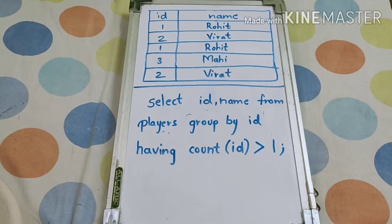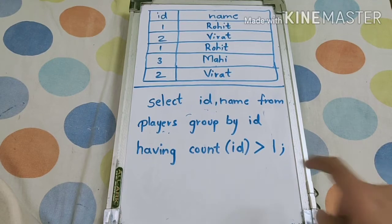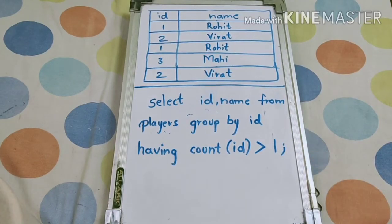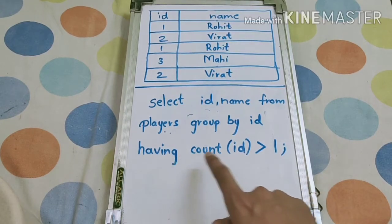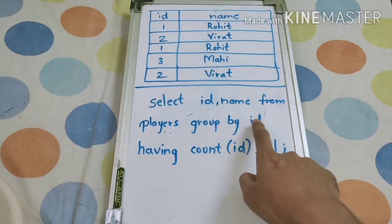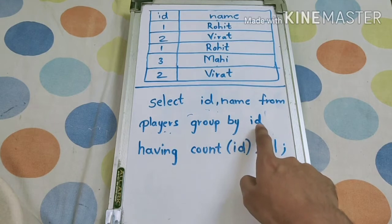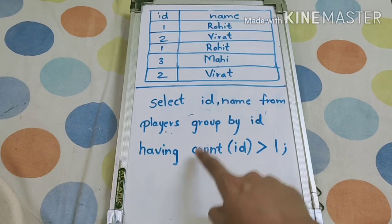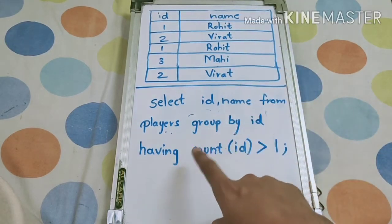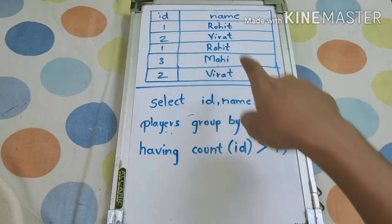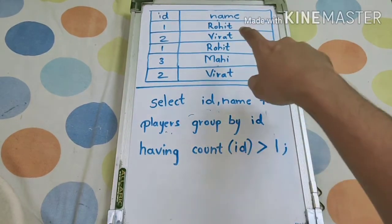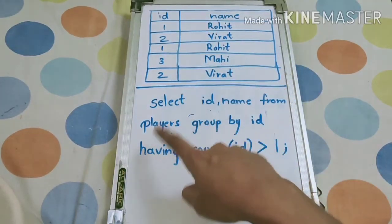Once we group by the specific column — here id — we just have to write HAVING COUNT(id) greater than 1. A duplicate means records appearing more than one time, so you write HAVING COUNT of the column used in GROUP BY greater than 1. This will print Rohit and Virat since the count of id for them has appeared more than once, and for Mahi only once.